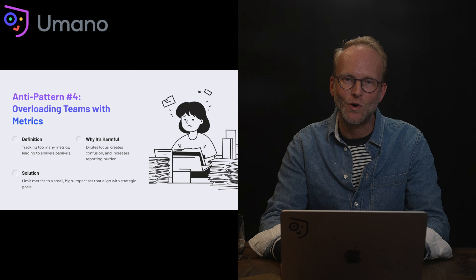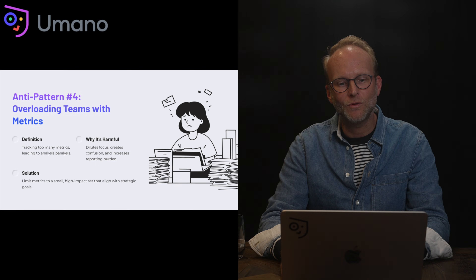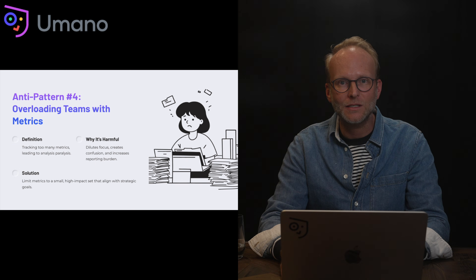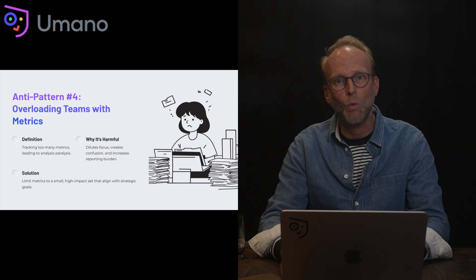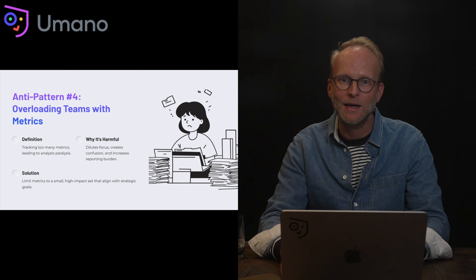Anti-pattern four: overloading teams with metrics. This is really about applying too many metrics for a team to look at, creating analysis paralysis. It's harmful because it dilutes focus, creates confusion, and increases the reporting burden. The solution is to be really clear on why you're looking at a particular set of metrics and select only the few that matter most in being able to track the impact of an experiment or a change in your way of working.